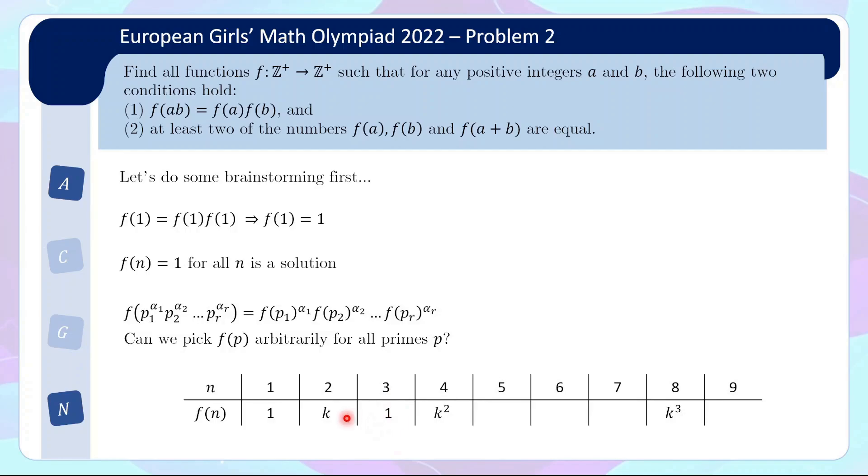So once we view this as 1, 2 times 3 is 6, so we know f(6) is also k. Now the same question applies to 5. Can we choose it freely?